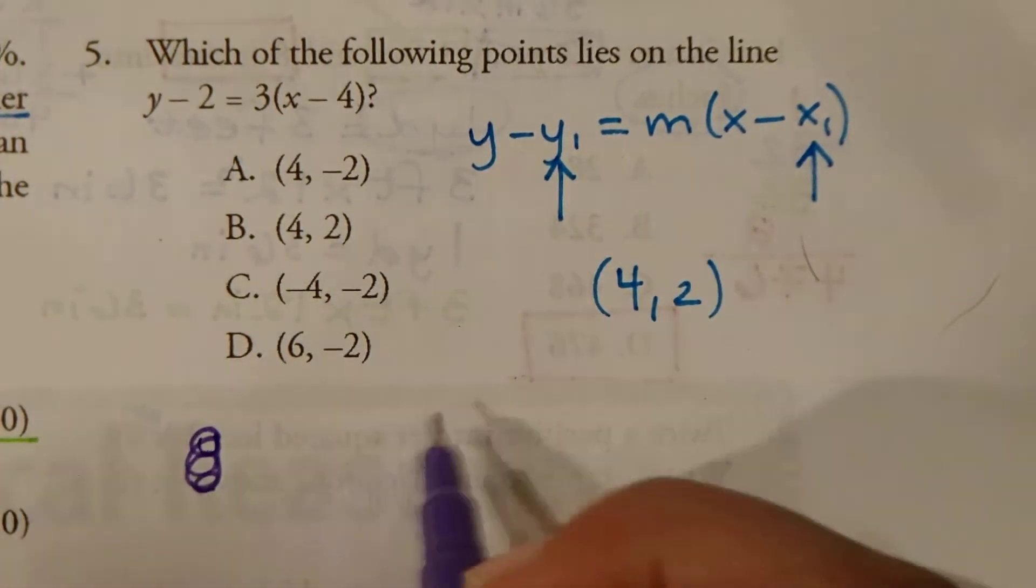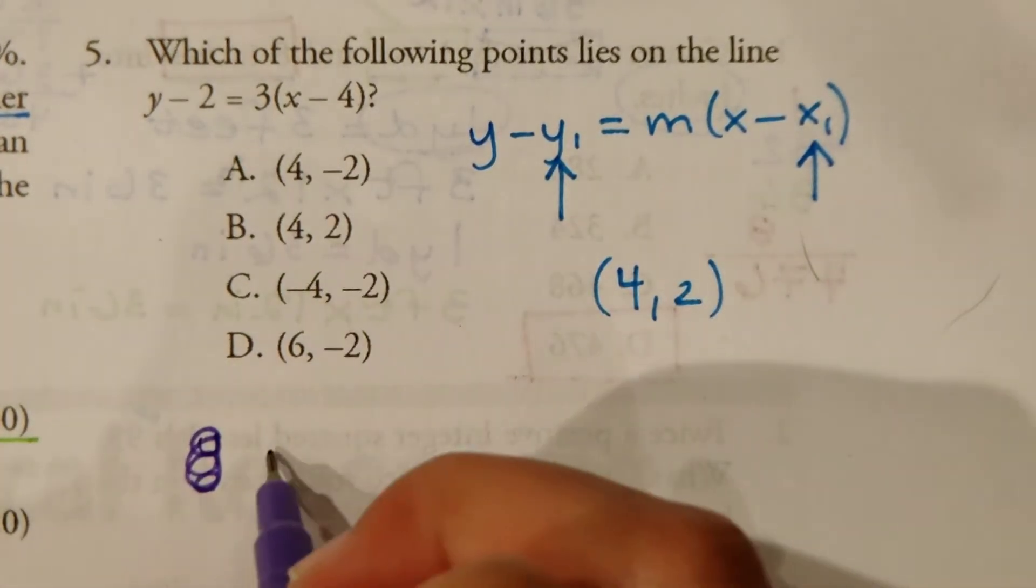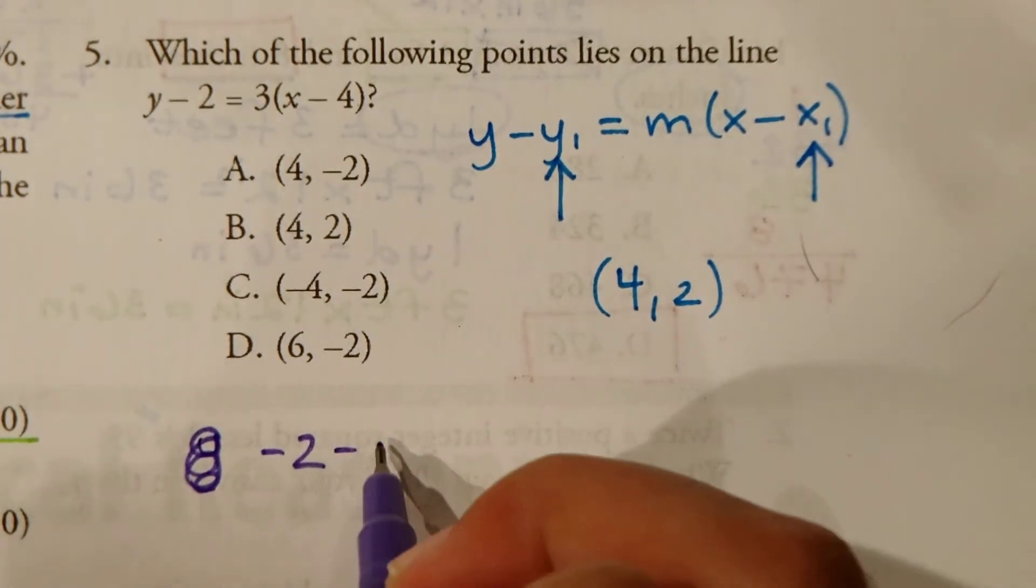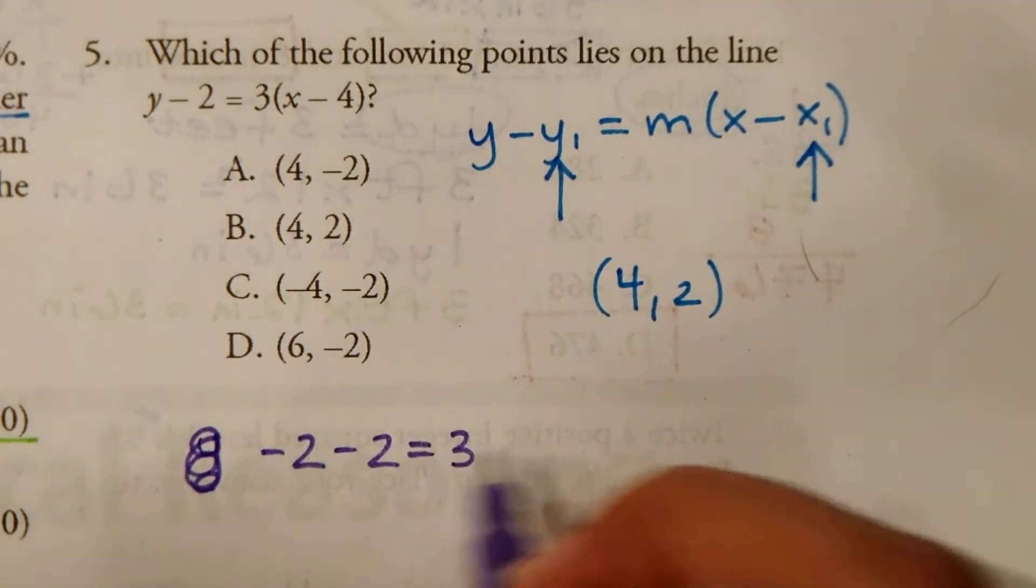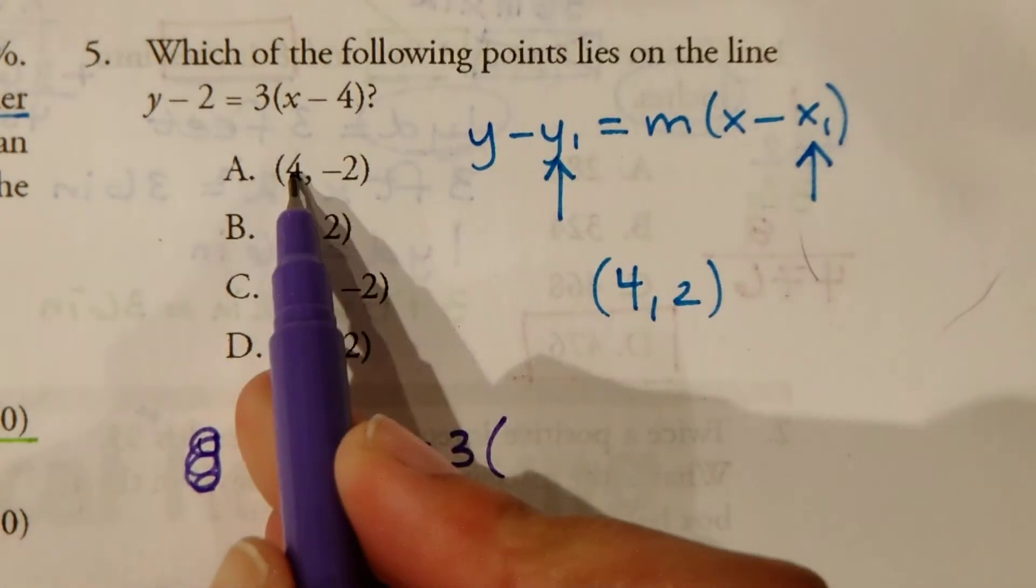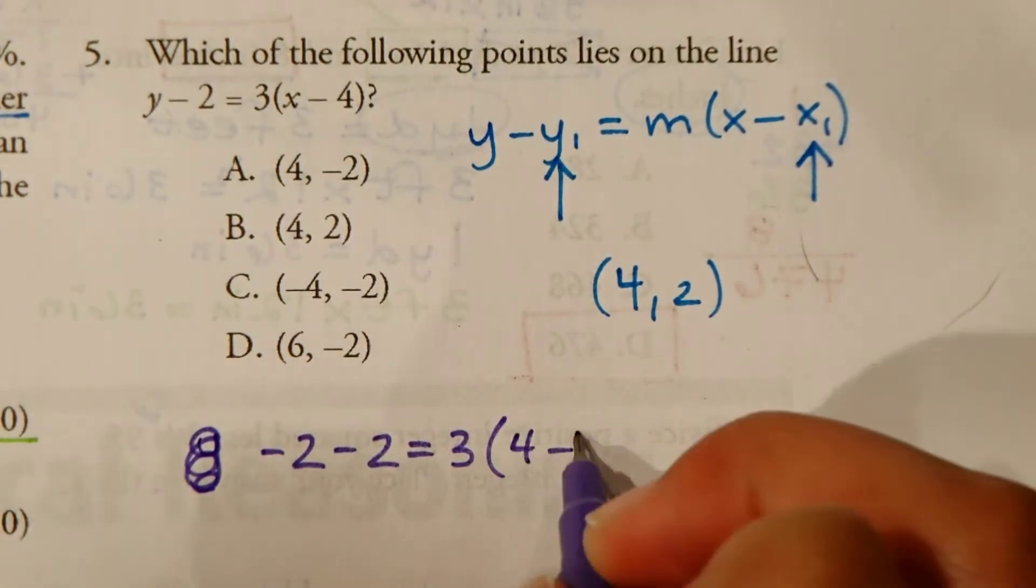So, we're going to say, the y in this case is negative 2. So, negative 2 minus 2 equals 3 times the x-value is here, 4 minus 4.